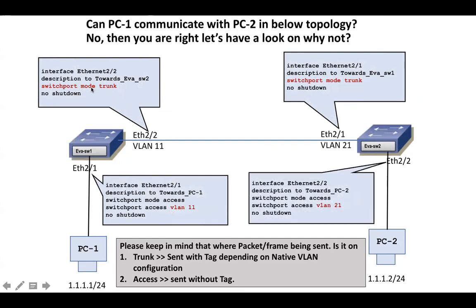The interlink port has been changed and configured as a trunk port. Now let's see whether PC1 and PC2 are able to communicate. If you think no, then you are right. Let's look at why. Traffic is originated from PC1. As soon as EVA Switch 1 receives that traffic, it determines it is for VLAN 11. It then checks if it has any port in VLAN 11 — here only the trunk port is available, where all VLANs are allowed.